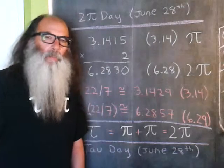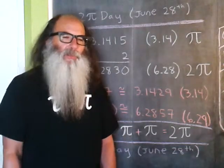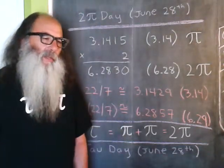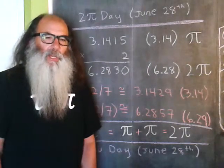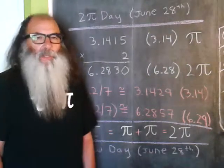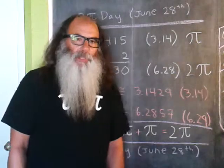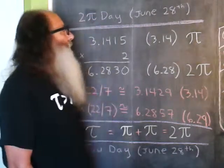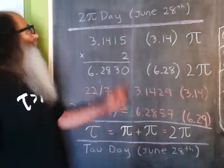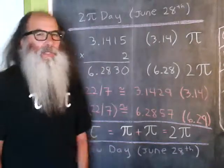Today's date in month-day format is 6/28. Switch the slash to a dot, you get 6.28, which is approximately equal to 2π. Consequently, June 28th is celebrated as 2π day.